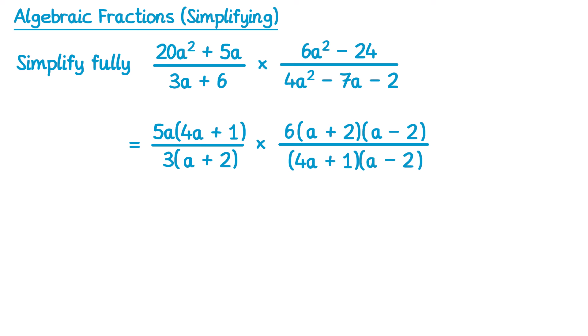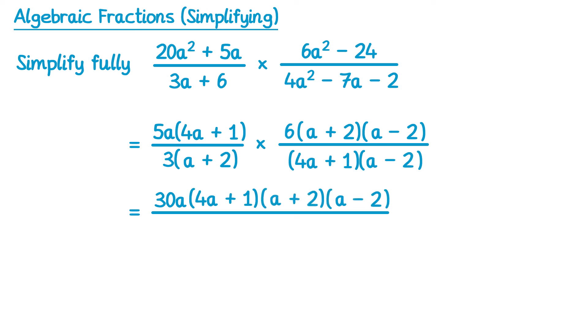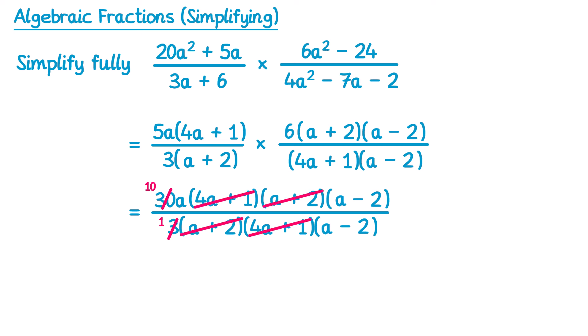Now that we've factorised everything we can multiply the fractions together. To multiply fractions you multiply the numerators and then the denominators. So if we multiply the numerators first, we've got 5a and 6, that will multiply to give 30a, and then we've got three more brackets: 4a plus 1, a plus 2, and a minus 2. On the bottom we've got 3, then a plus 2, then 4a plus 1, and a minus 2. Now we come to the point of simplifying. If we look at the numbers we've got 30 divided by 3, that gives you 10. And then for the brackets, the 4a plus 1s match, the a plus 2s match, and so do the a minus 2s, so they all cancel out. So all we're left with on the top is 10a, and on the bottom it's just 1, so the answer is 10a.